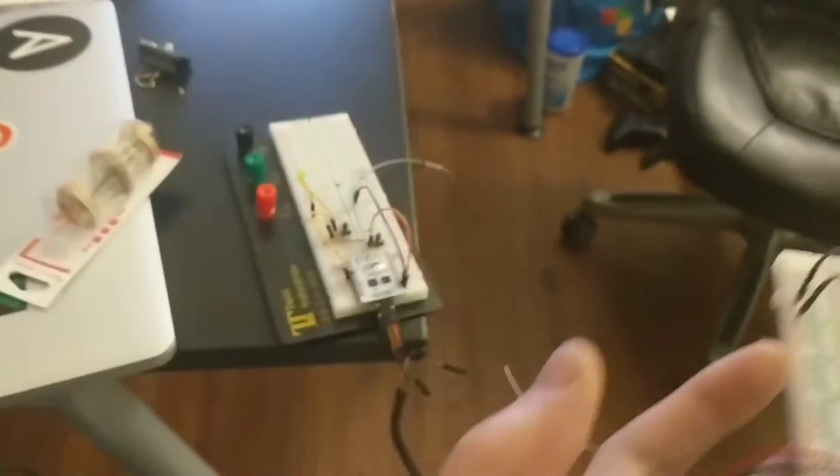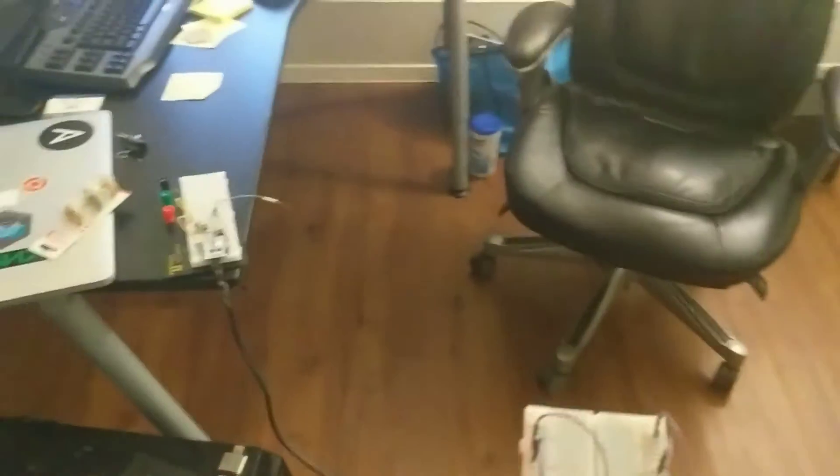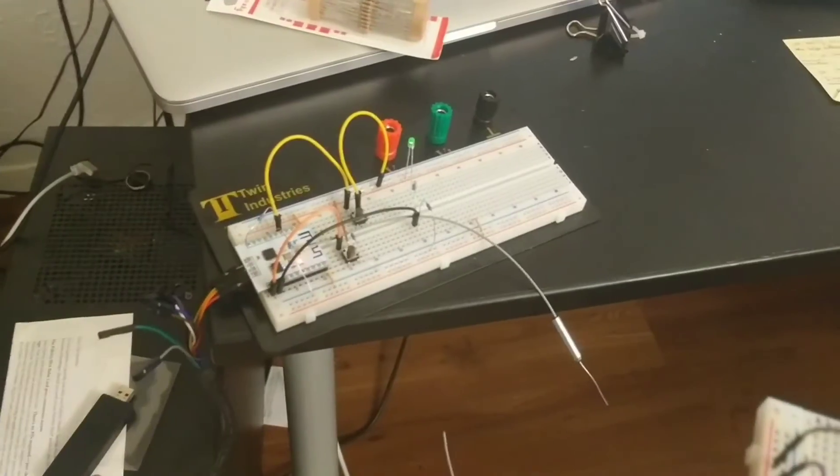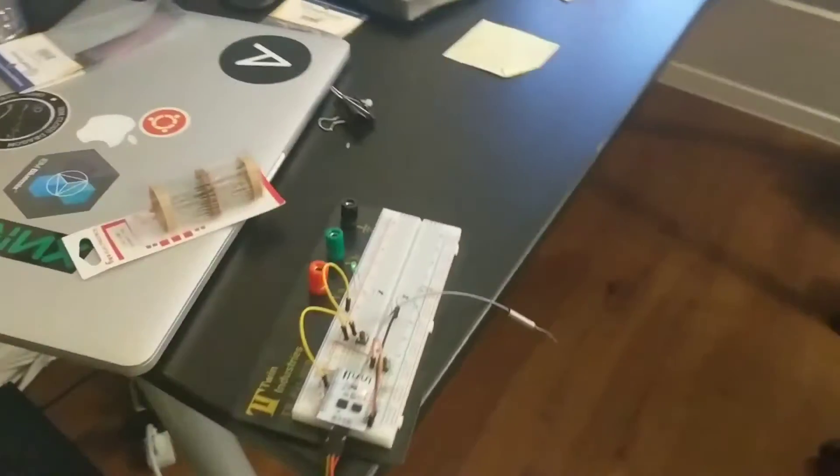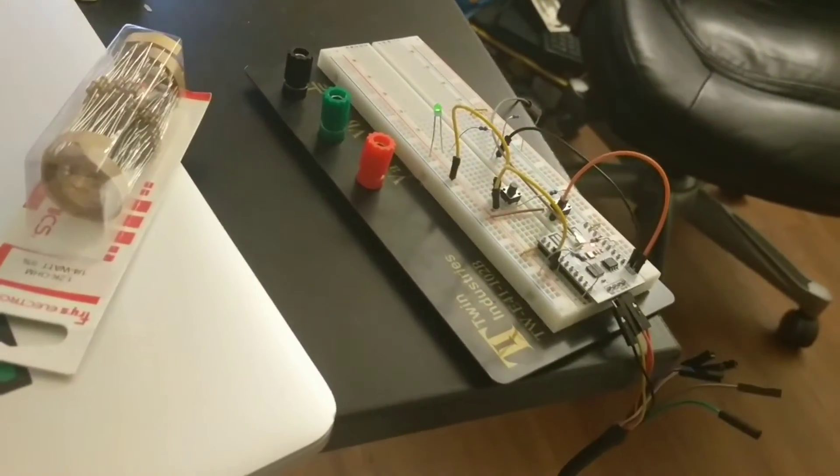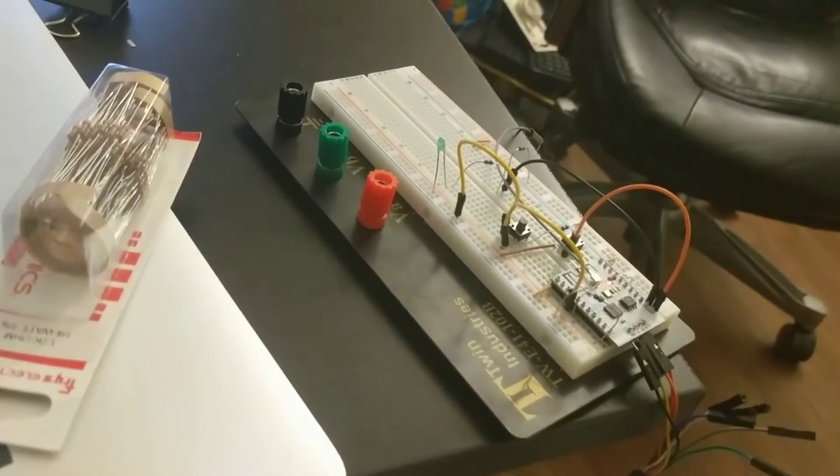And the way this is working is using the signal strength between the two. So when this one right here detects that the signal is high enough, it'll keep the LED on. And then again, once the signal is low enough, then the LED will turn off.